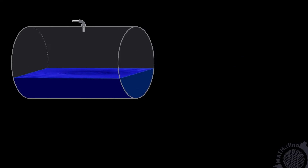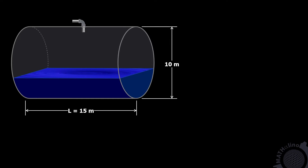We have this cylindrical tank with axis horizontal. The dimensions are 10 meters in diameter and 50 meters in length. Water flows in at 150 liters per second. At any time, the depth of the water in the tank is H. What is required is how fast the water level is rising when the depth is 3.5 meters — we are looking for dH/dt.